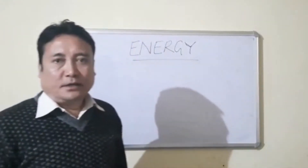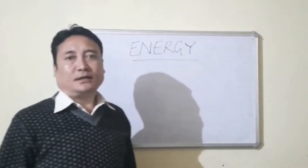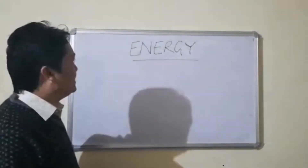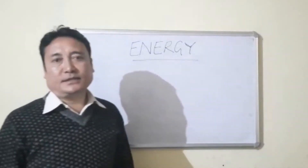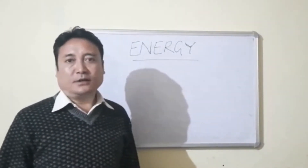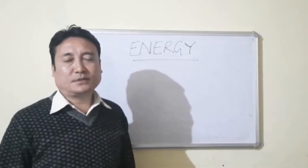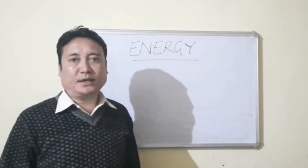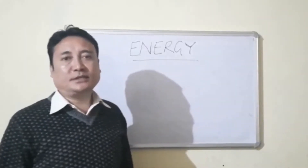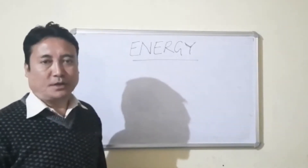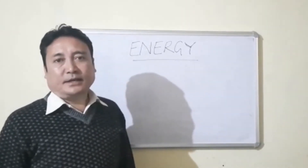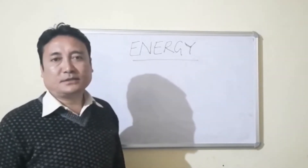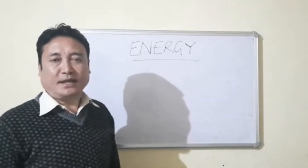Today we will discuss a new topic from the same chapter: energy. This energy is needed by all of us to perform some work. In order to do work, energy is needed. Therefore, we can say that energy is the capacity or the ability to do work. Energy is needed by all living things like human beings and animals to do any kind of work or activities.